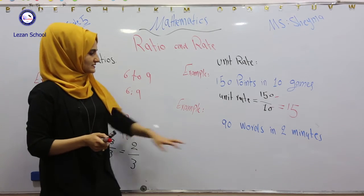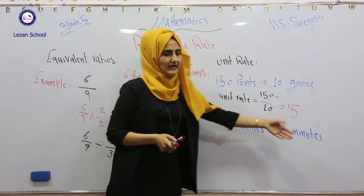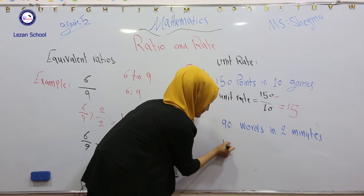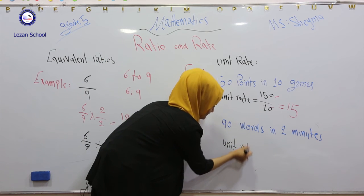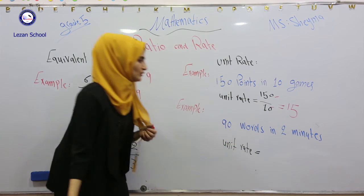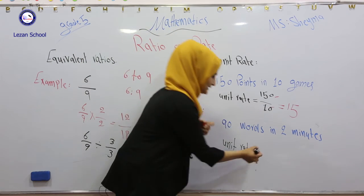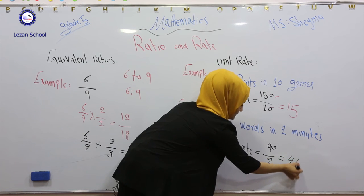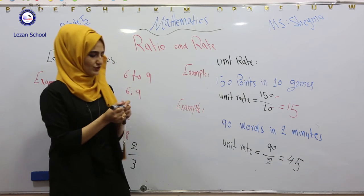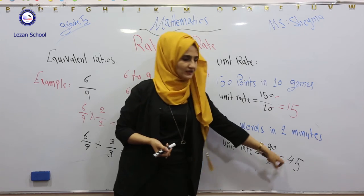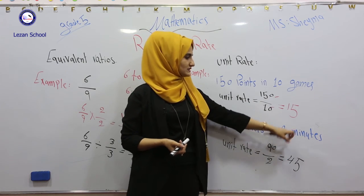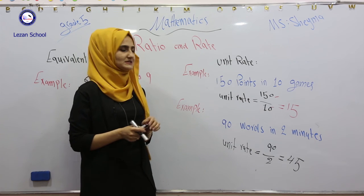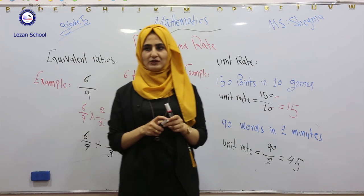Another example: 90 words in two minutes. How can we find unit rate? Unit rate equals... Again, it's comparing the greater number and the smaller number. 90 divide by 2. 90 divide by 2 equals 45. So 45 is a unit rate for 90 words in two minutes. 15 is a unit rate for 150 points in 10 games. Thanks for listening.